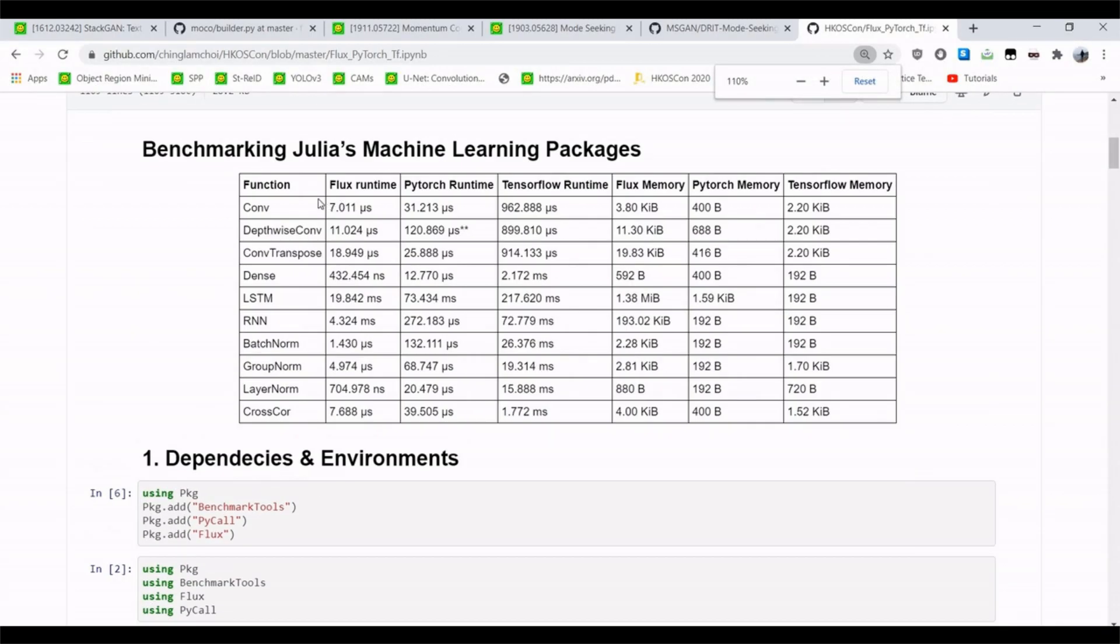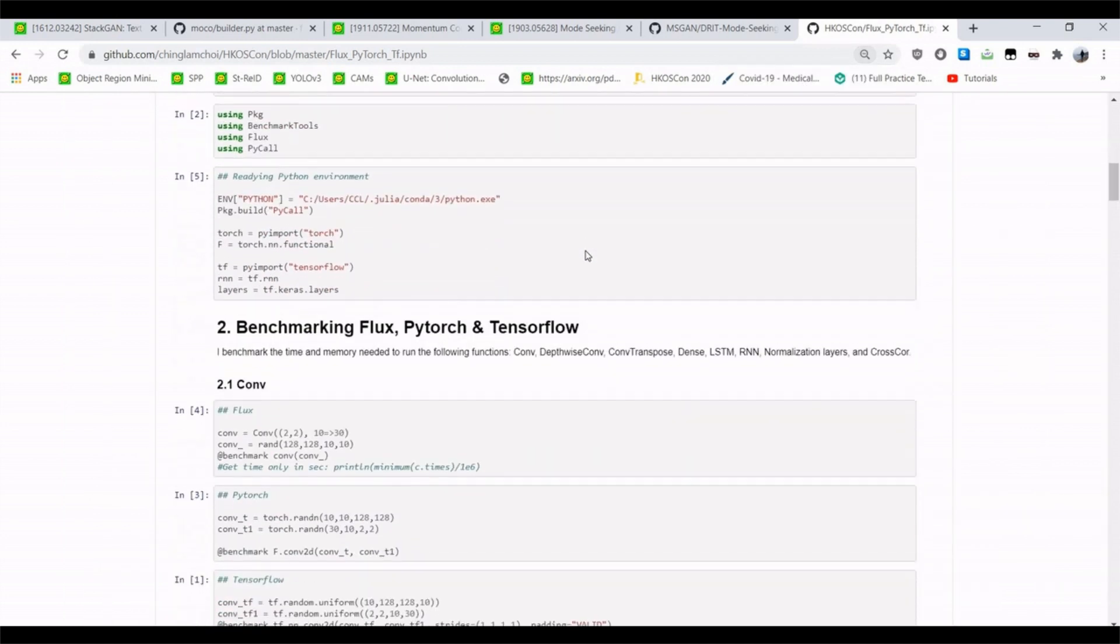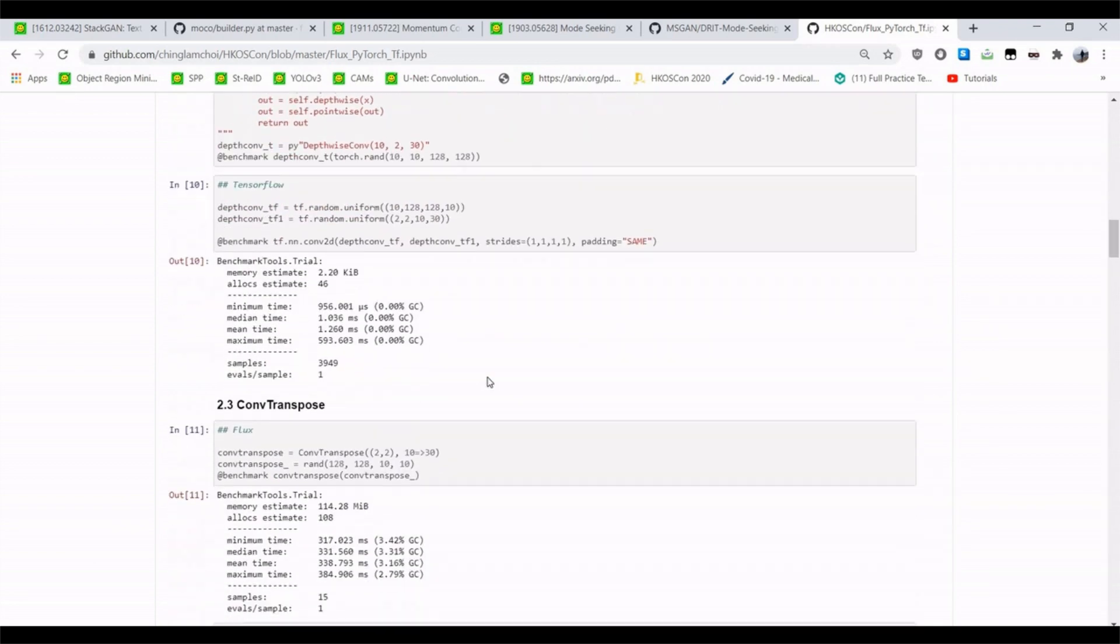In GCI, I did some benchmarking of Flux versus PyTorch and TensorFlow using BenchmarkTools.jl and found that Flux was consistently orders of magnitude faster and less memory intensive than the other two.